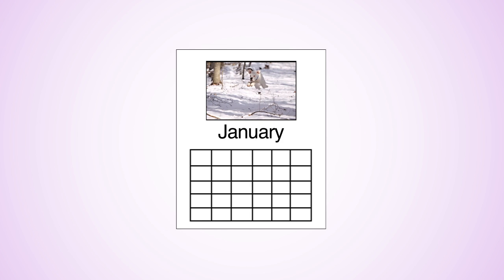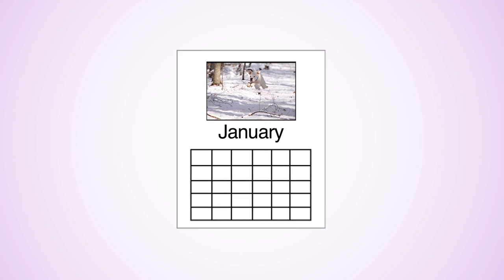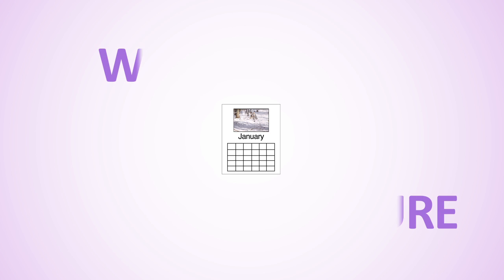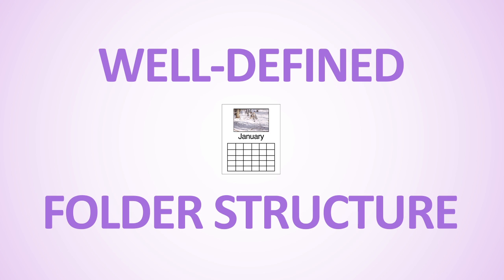First, let's look again at the calendar example from our last video. You're making a calendar that features pictures of different dogs for each month of the year. To keep the project manageable, you'll want to create a well-defined folder structure to organize all the pictures you are collecting.